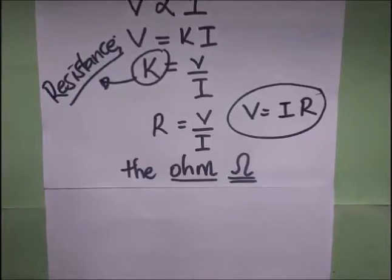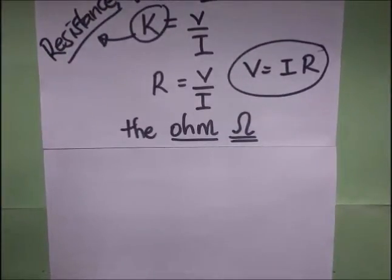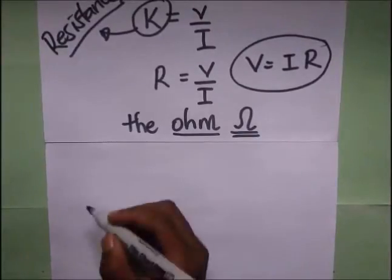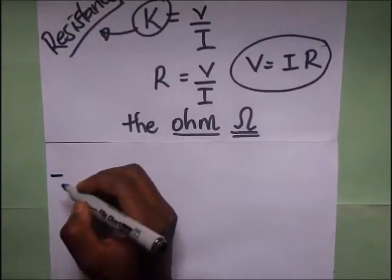Now we are going to look at factors that affect resistance of a conductor. We have basically four factors that affect the resistance of a conductor.